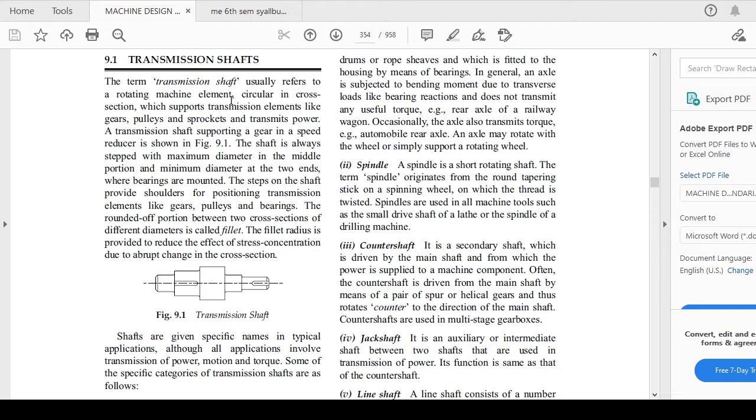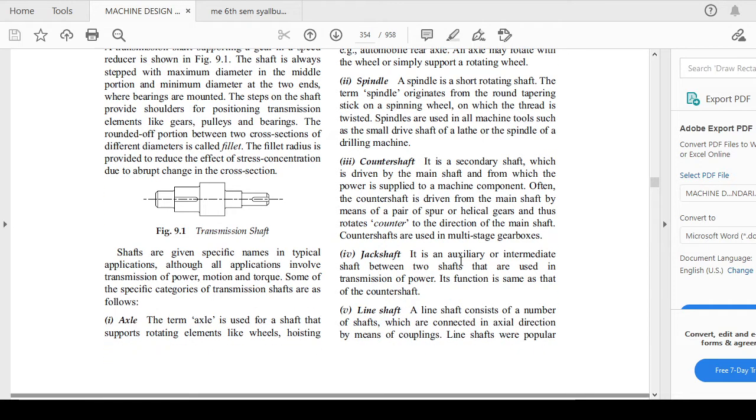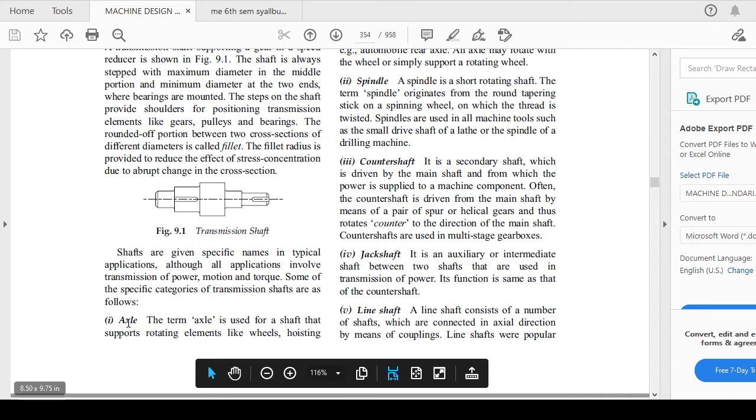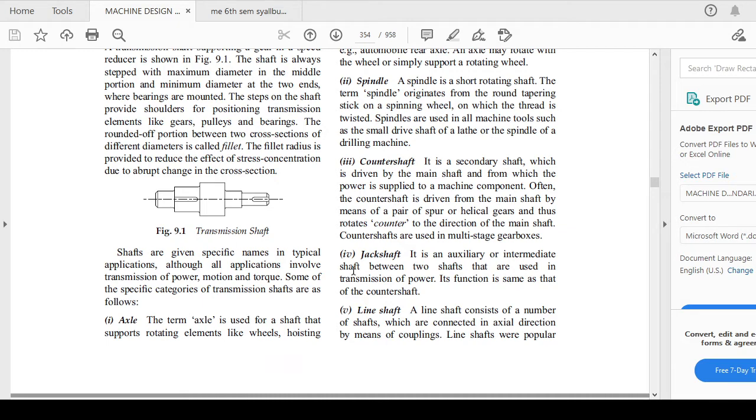Transmission shafts are used with gears, pulleys, and sprockets for the transmission of power. They can also be called spindle, counter shaft, jack shaft, line shaft, and axles. These are a few examples or different names of transmission shafts.